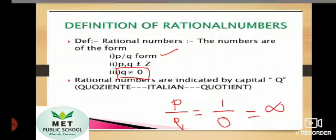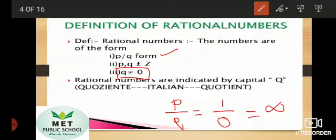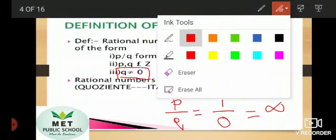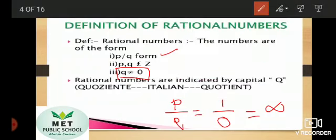Rational numbers are derived from the Italian word which means quotient.